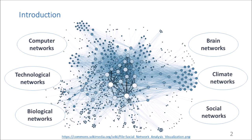I want to start from the fact that most objects in nature and society have a network structure with binary links that can be represented as a network. Real-world networks such as computer networks, technological networks, biological networks, brain networks, climate networks, and social networks are complex and widely spread. Topological properties of networks significantly determine their functionality and are the object of study of complex networks.